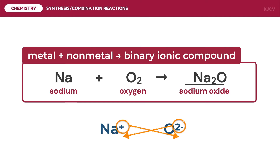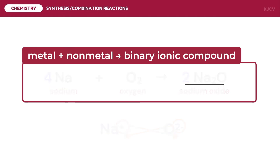This reaction is not yet balanced. To balance oxygen we use 2 as a coefficient of sodium oxide; to balance sodium we use 4 as a coefficient of sodium. The complete balanced reaction is 4 moles of sodium reacting with 1 mole of diatomic oxygen to form 2 moles of sodium oxide.